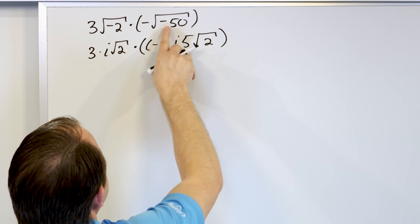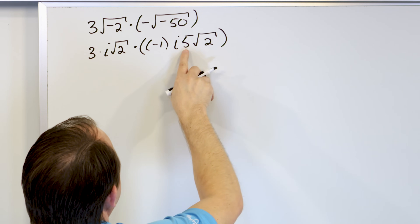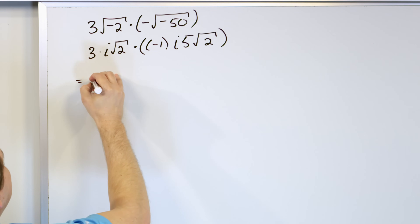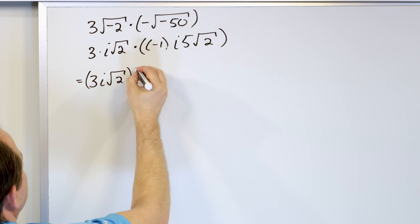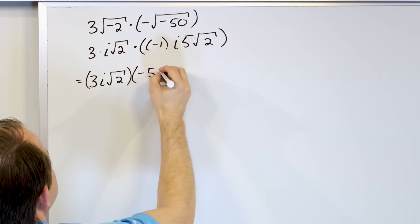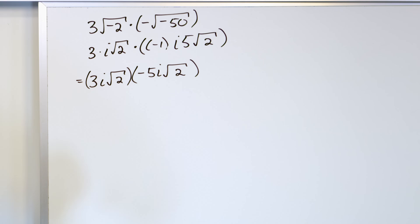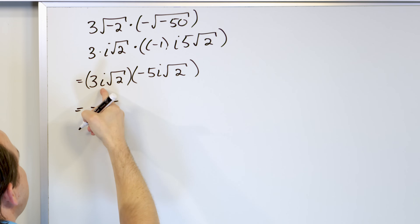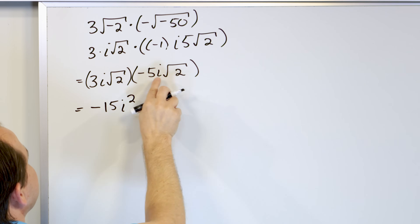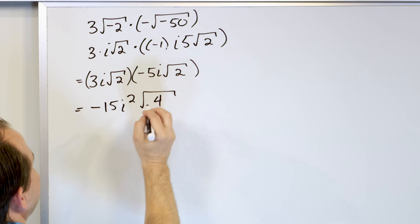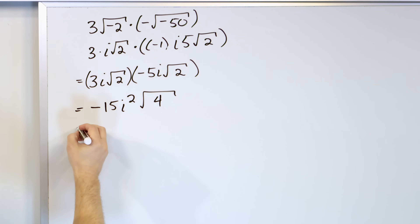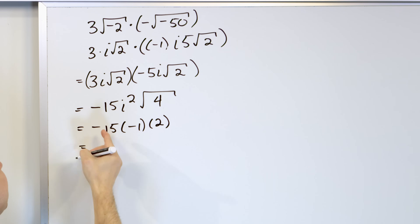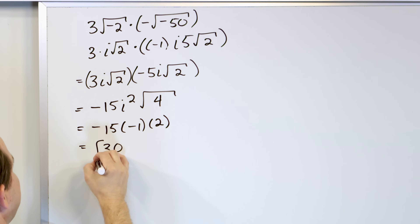The negative here comes from what was above. Now cleaning it up: first term is 3 times i times root 2, second term is negative 5 times i times root 2. Multiplying the coefficients: negative times positive is negative, 3 times 5 is 15, i times i is i squared, and root 2 times root 2 is root 4. So we have negative 15 times i squared times root 4. Since i squared equals negative 1 and root 4 is 2, negative times negative is positive, and 15 times 2 is 30. The answer is positive 30.